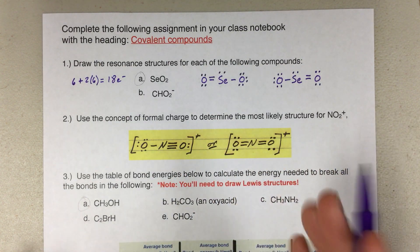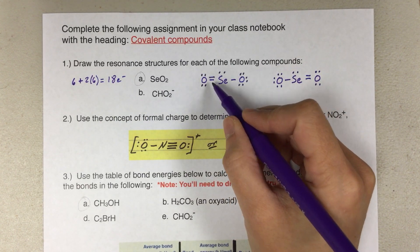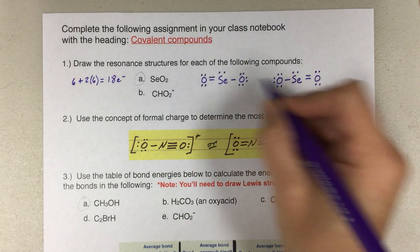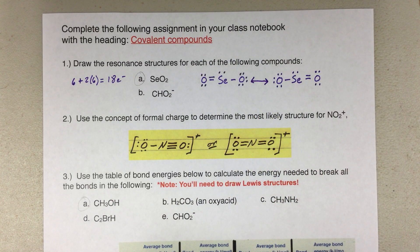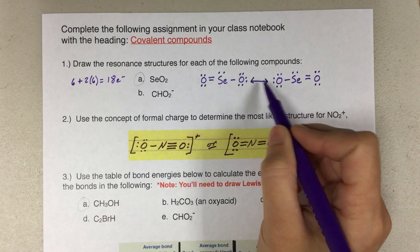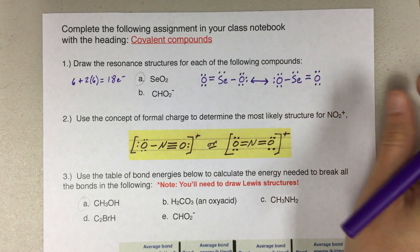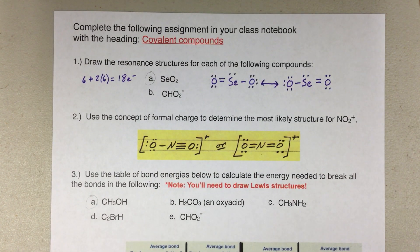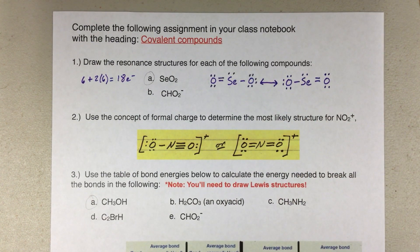When you get to the point where you make the double bond and you think 'I could put it here or there,' that's a hint that there are resonant structures. The last thing you'll need is a double-headed arrow between your resonant structures. In this answer, we only have two resonant structures, so there's one double-headed arrow between them. If there were more, you'd need additional arrows. So that's the answer for 1A — two resonant structures, one with the double bond on each side.